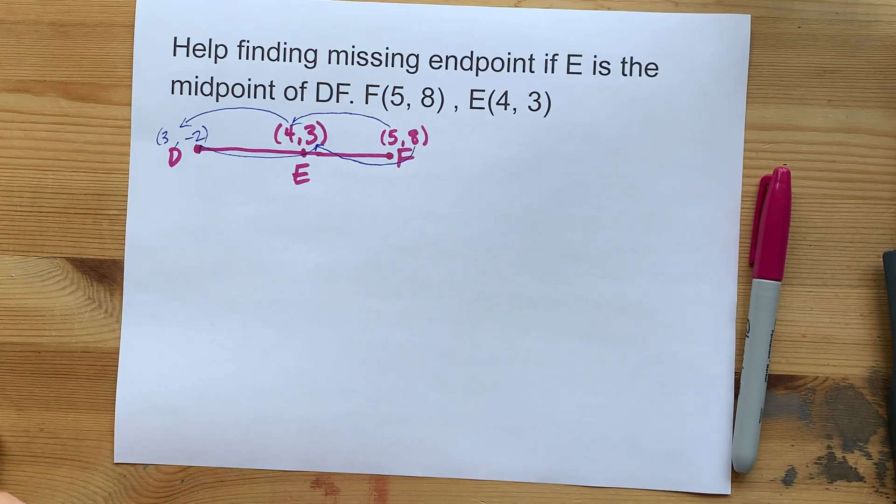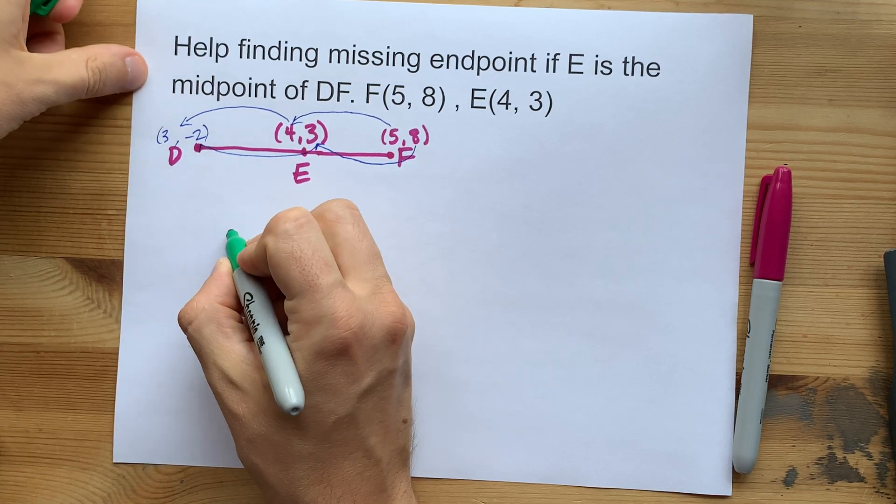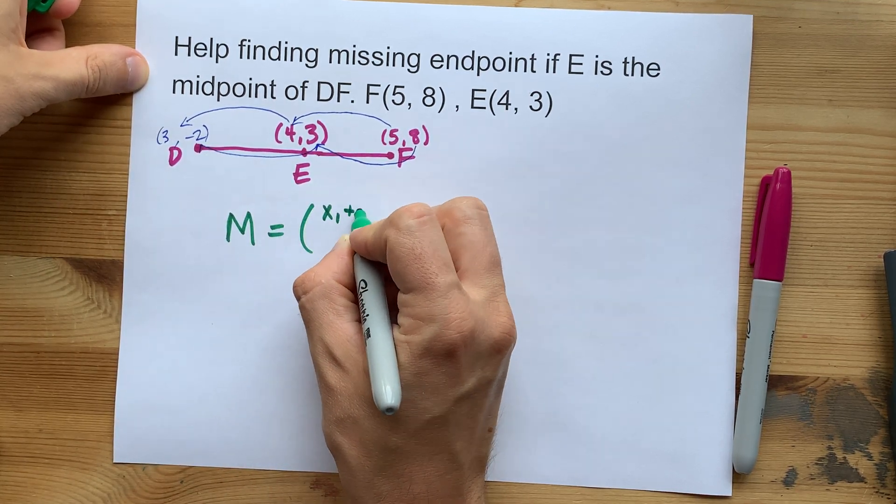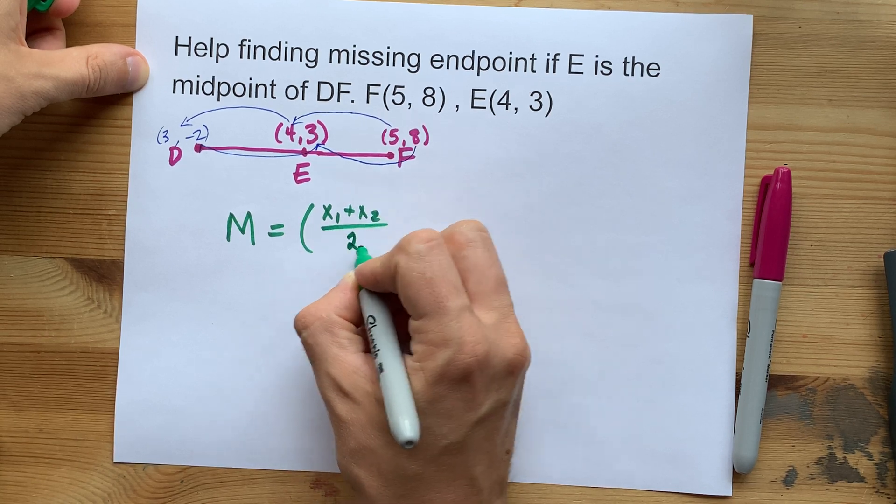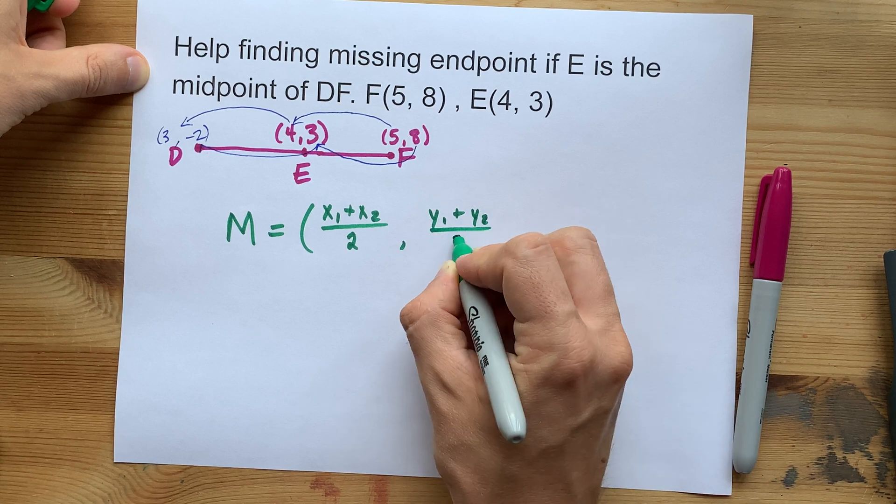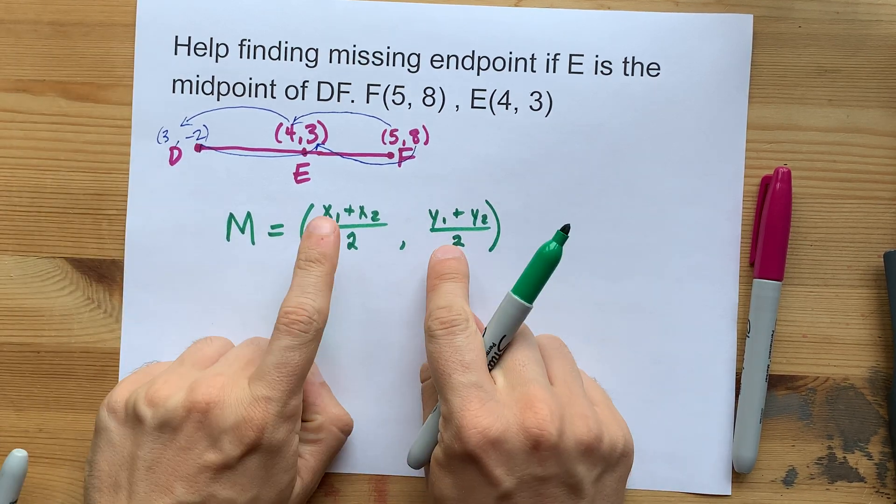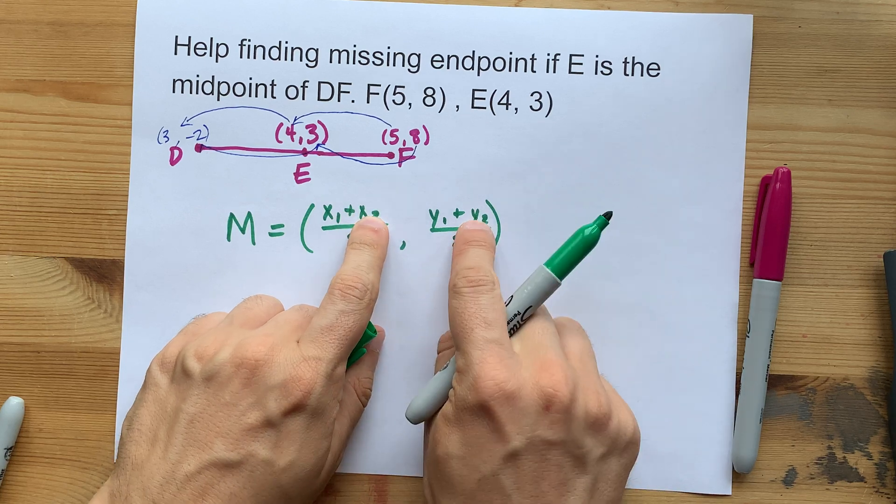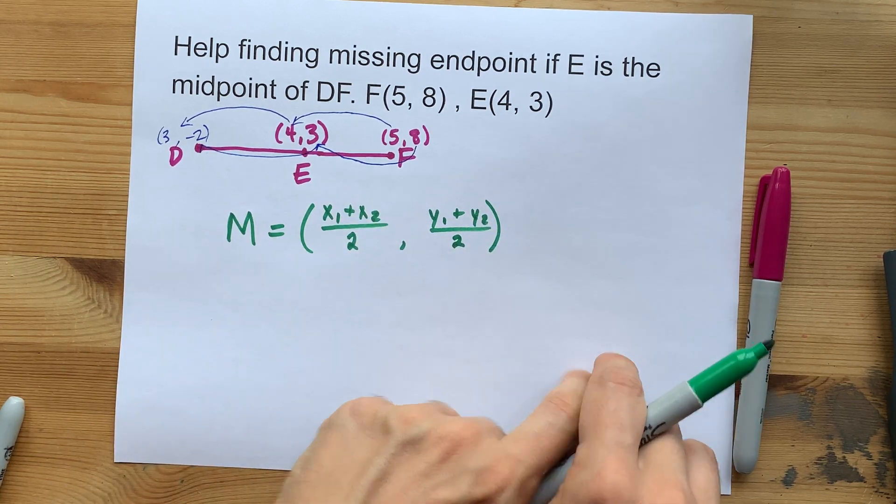What your teacher might want to see is the midpoint formula. The fact that the midpoint is X1 plus X2 divided by two comma Y1 plus Y2 divided by two. Where X1 Y1 are the coordinates of one endpoint, where X2 Y2 are the coordinates of the other endpoint.